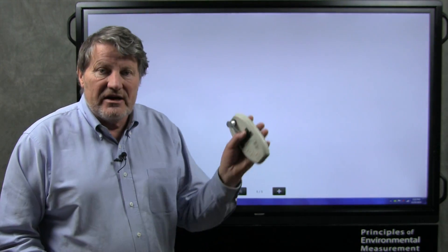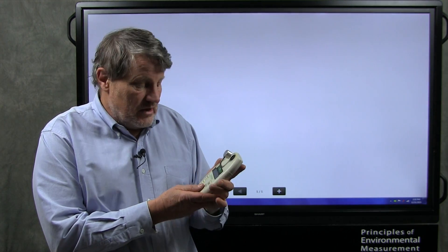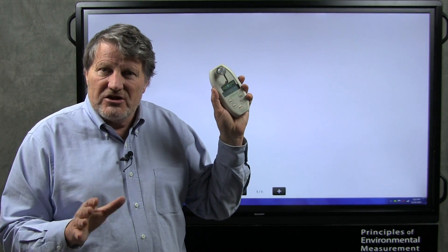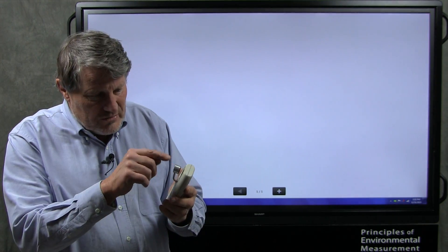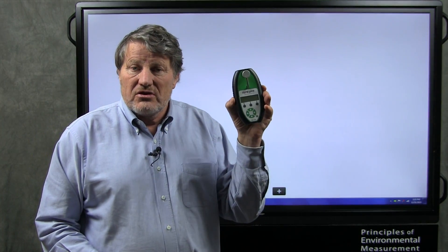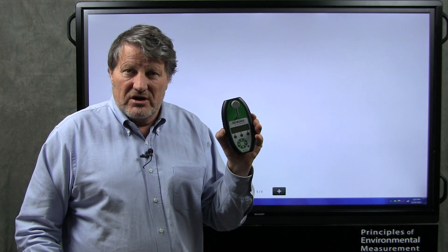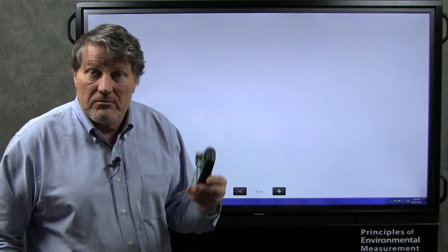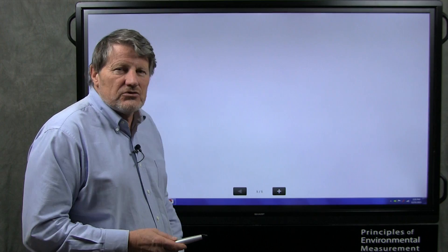Then some years later, OptiSciences came out with this meter. It has some advantages over the Minolta meter, little bigger area to average leaves, and then recently Apogee Instruments came out with this meter, which has some fundamental advances over the other types of research-grade meters for chlorophyll. So let's take a look at what those differences are.